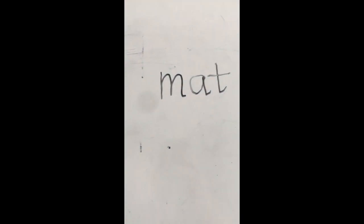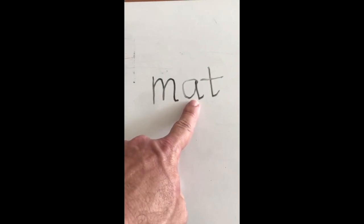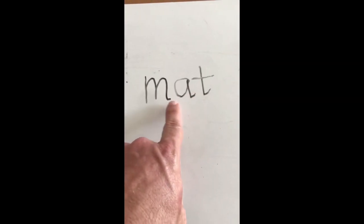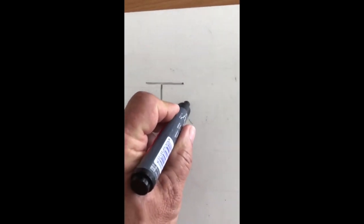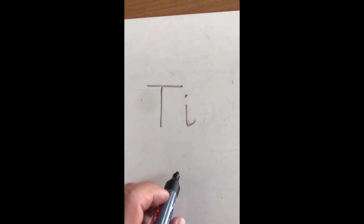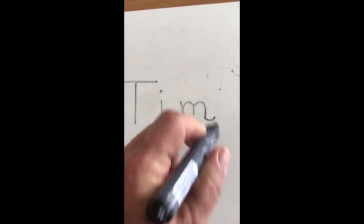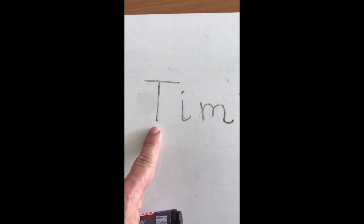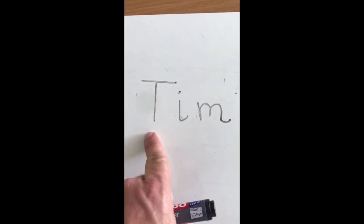Which of our words is that? N, A, T. Mat. See if you can guess this one. T, I, M. Tim.